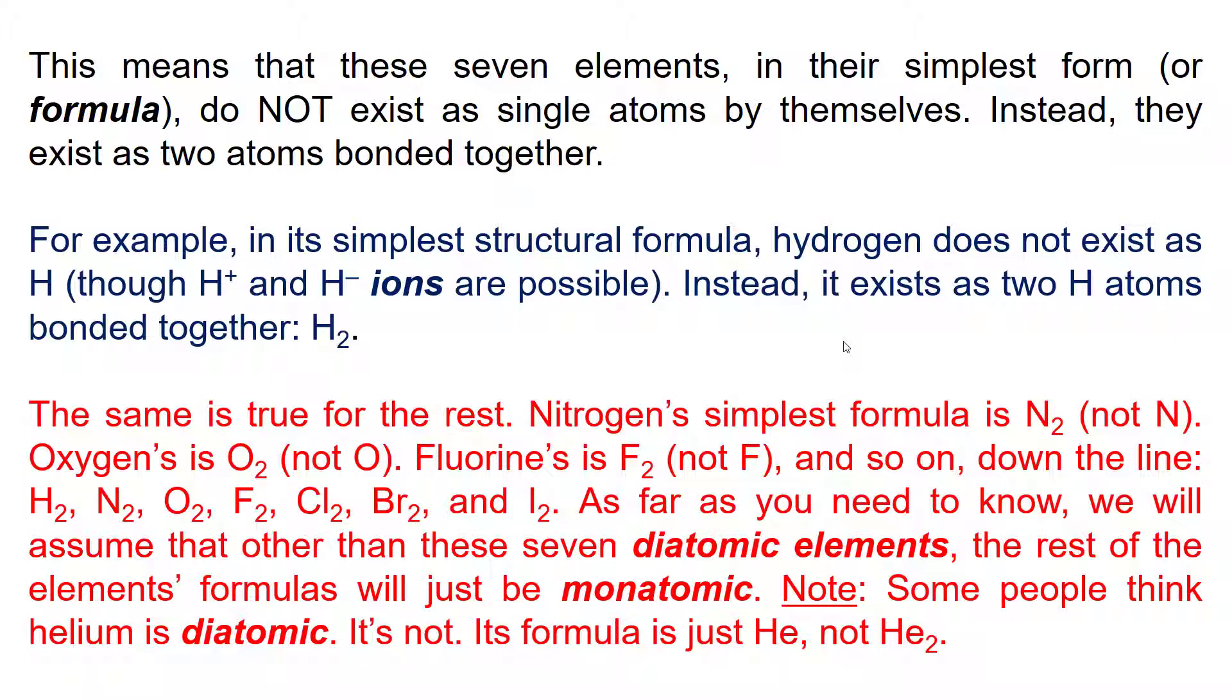So as far as you need to know, we will assume that other than these seven diatomic elements, the rest of the elements' formulas will just be monatomic. Now, please note, some people, for whatever reason, think that helium is diatomic. It is not. Its formula is just He, not He2.